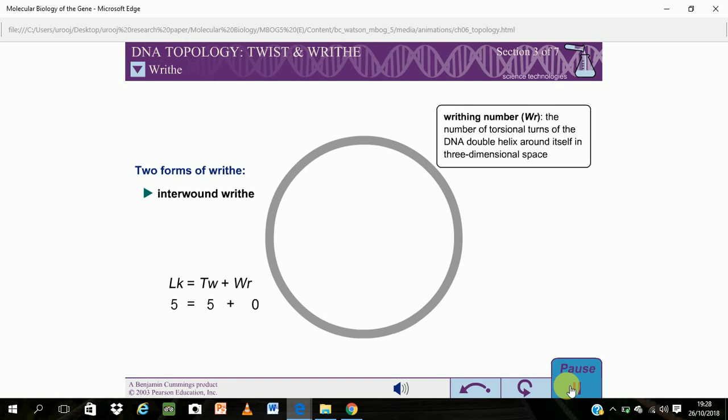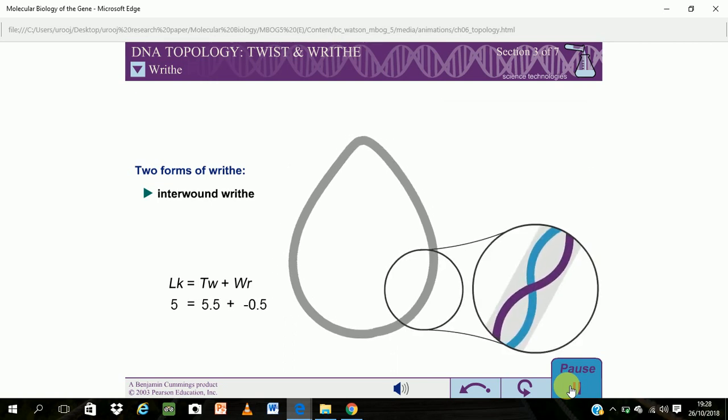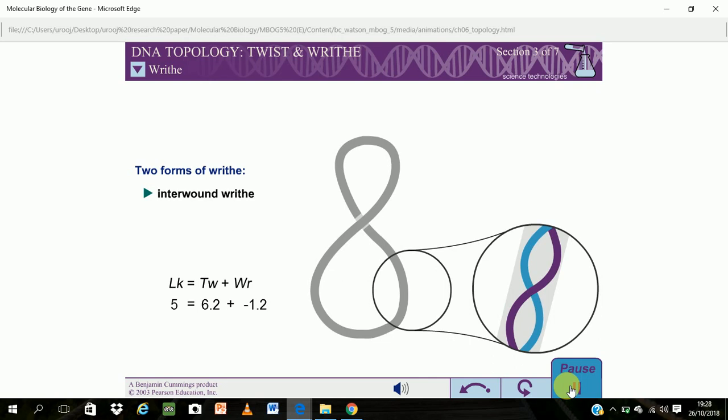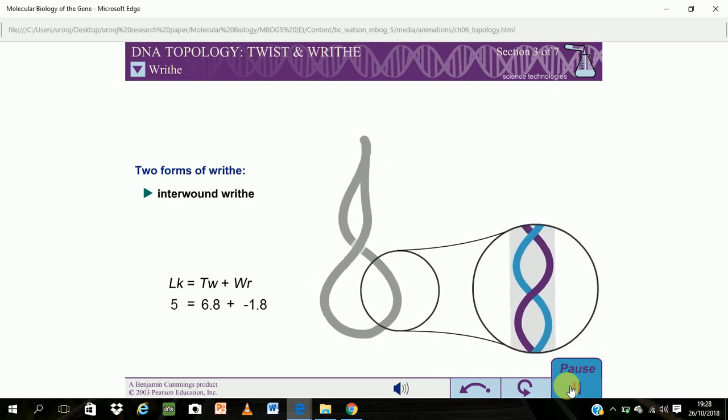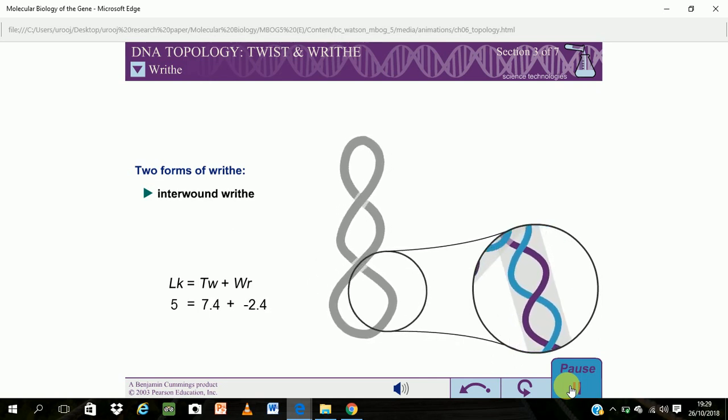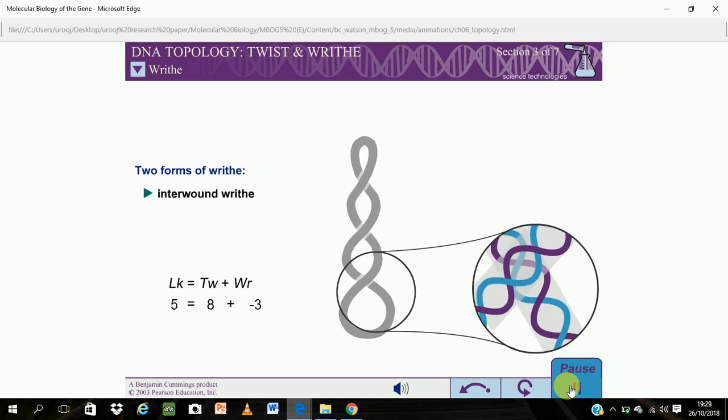The writhing number is the total number of writhes in a molecule of DNA. If right-handed DNA forms a right-handed interwound helix, the DNA must twist to accommodate the writhe. Therefore, right-handed interwound turns are assigned negative writhing numbers. Note that, although the linking number must be an integer, the twist and writhing numbers can have fractional values.